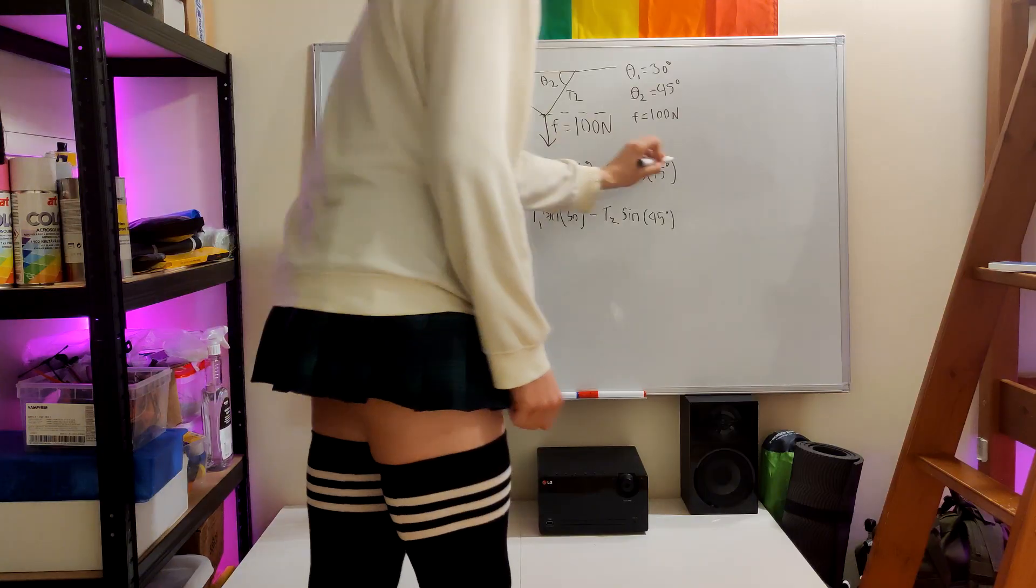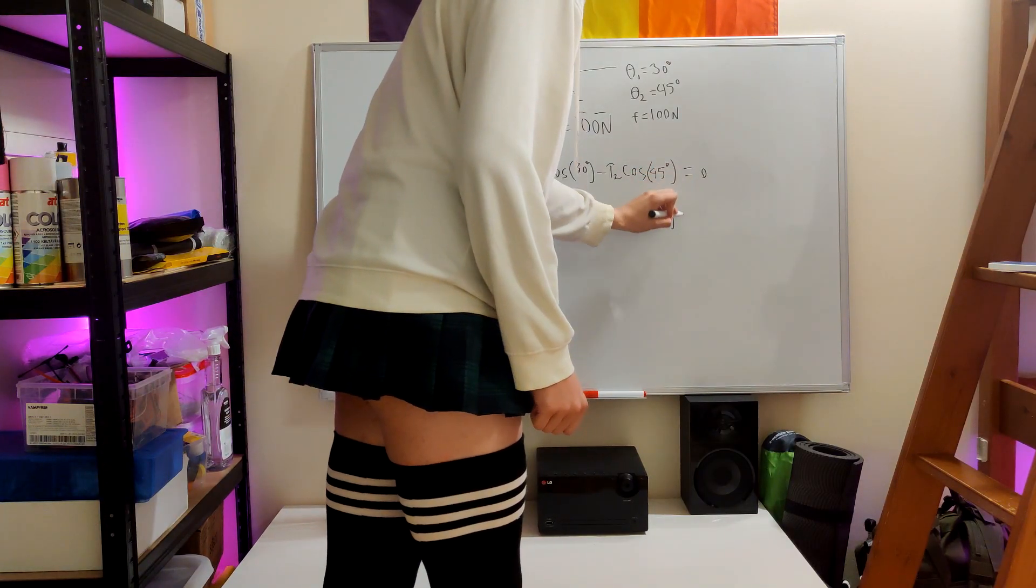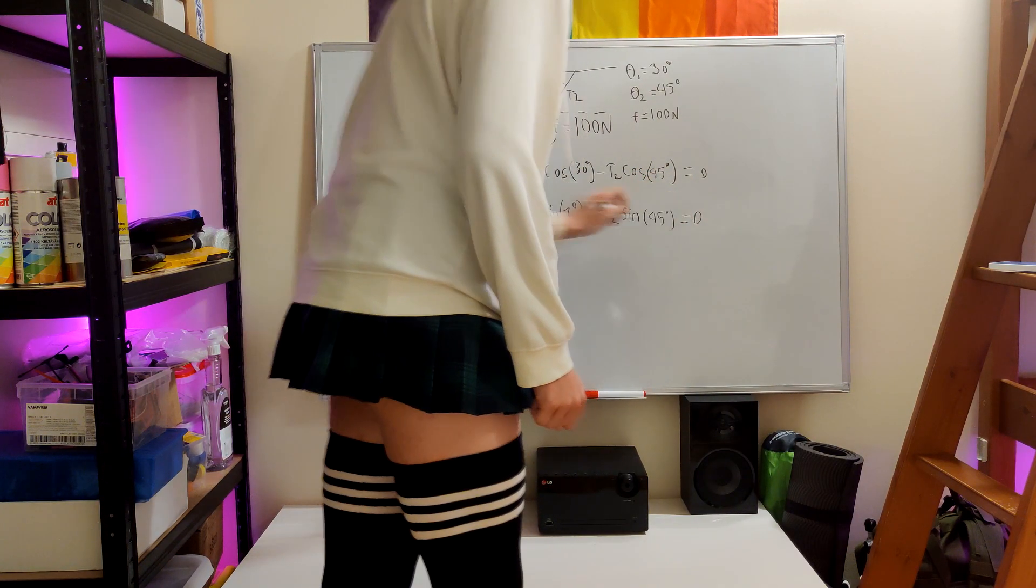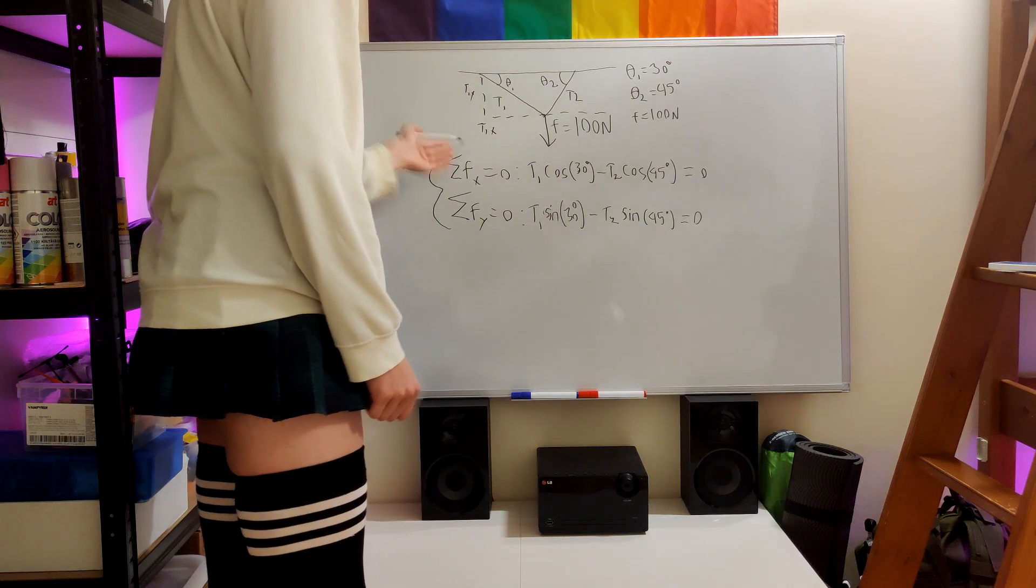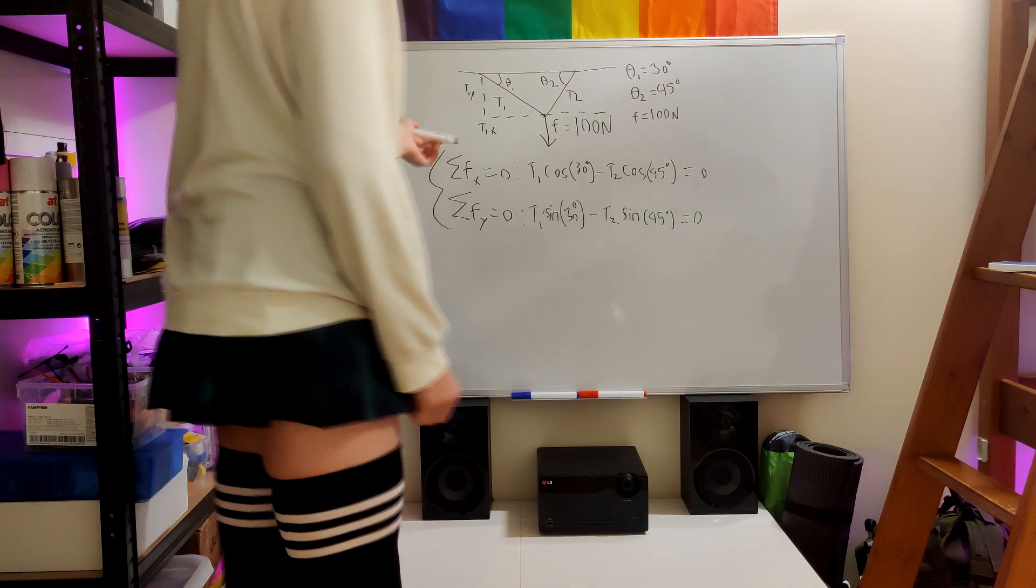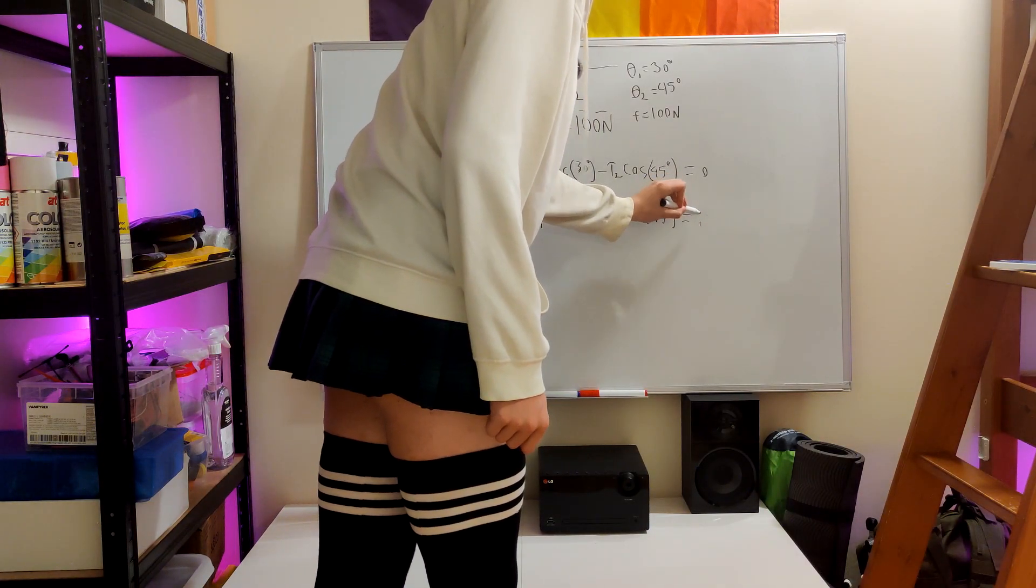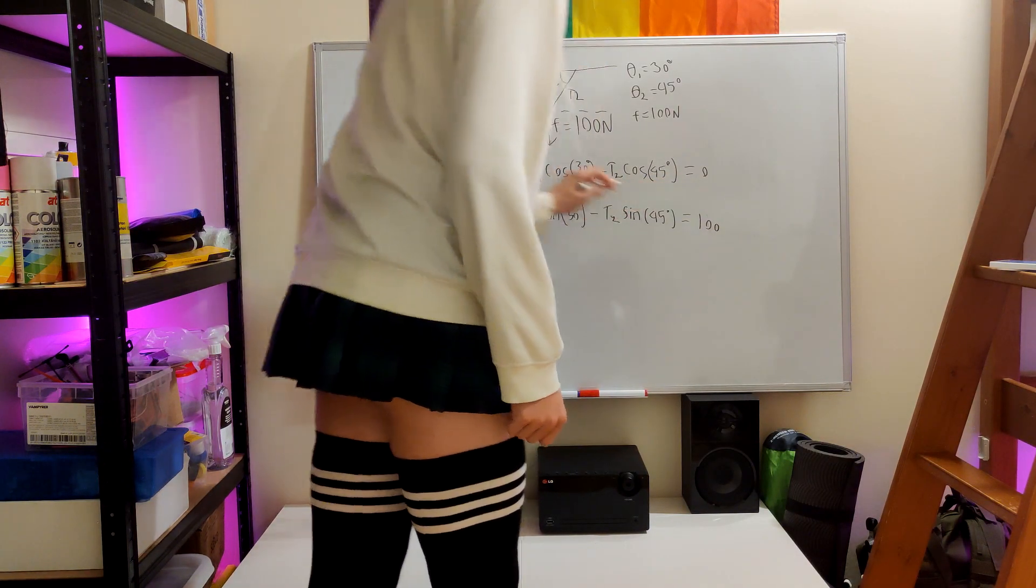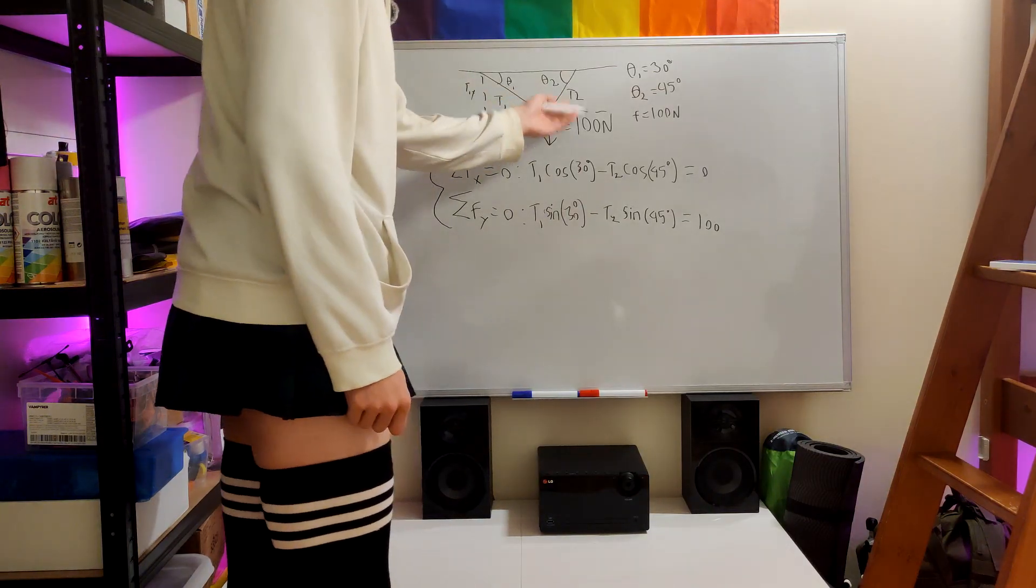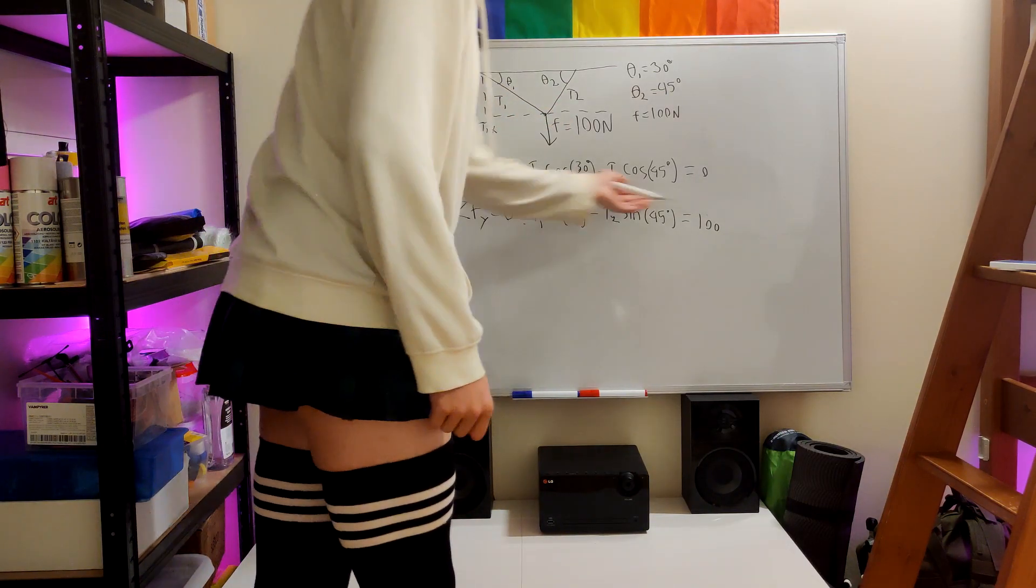And of course equals zero, since the forces have to cancel out to fulfill this equilibrium requirement. So this one was actually 100 newtons, because the force downwards is 100, of course, and the y component must total that.